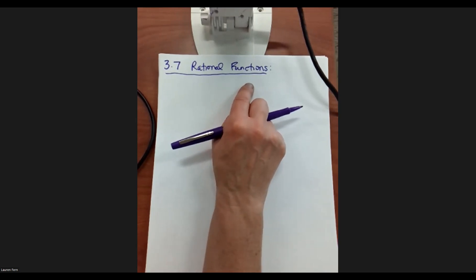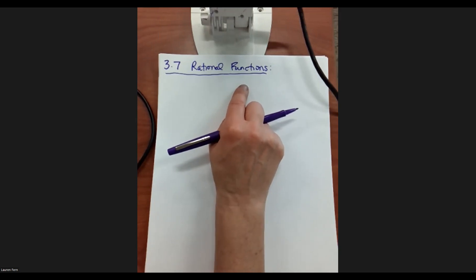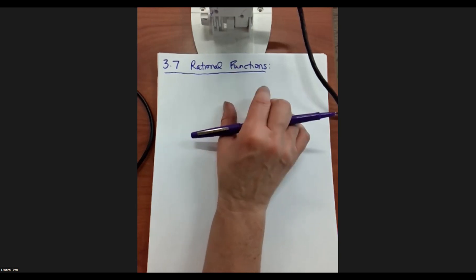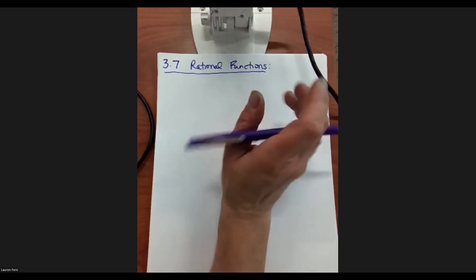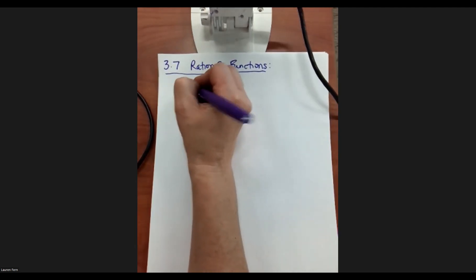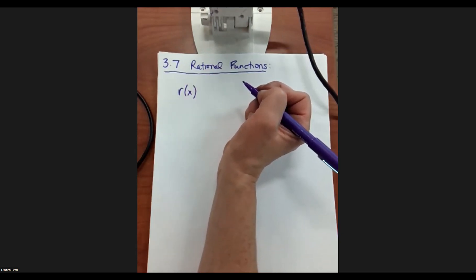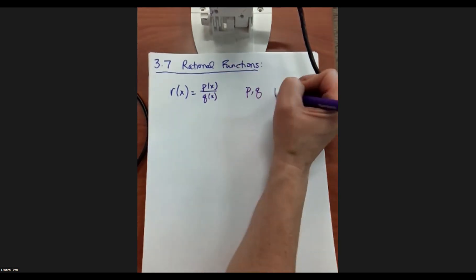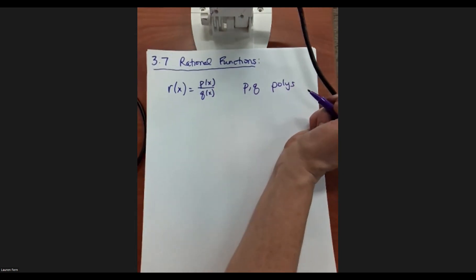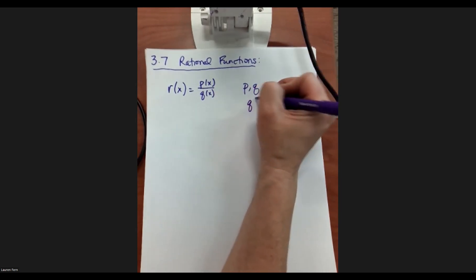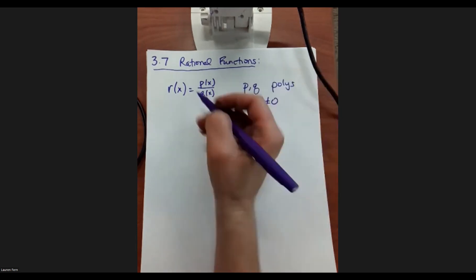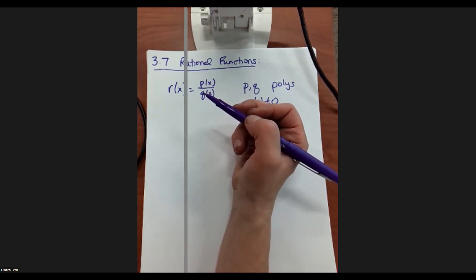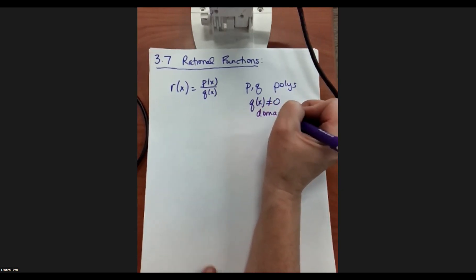I want to spend the first part of class talking about a couple of ideas I've mentioned before in exponentials and logs, but which really come to light here with rational functions. What's a rational function? I'll call it R(x) — R for rational. Essentially, it's one polynomial divided by another polynomial. But notice: if we're dividing, you have to watch for domain. You can never have your denominator equal to zero — that's totally illegal. So we're going to have domain issues here.